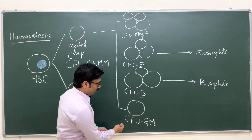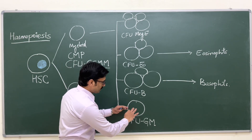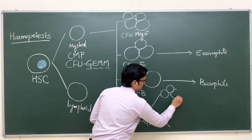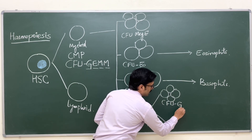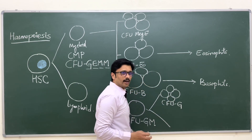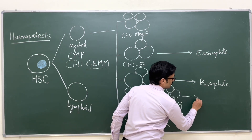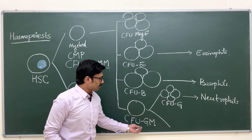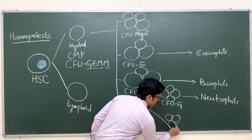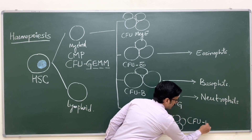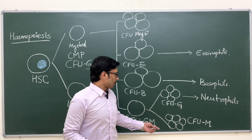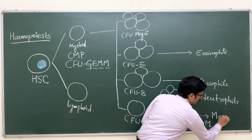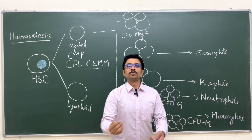The colony forming unit granulocyte-macrophage can give rise to two further colony types. The colony forming unit granulocyte differentiates to give rise to neutrophils. The colony forming unit macrophage differentiates to give rise to monocytes, and these monocytes mature to form macrophages.